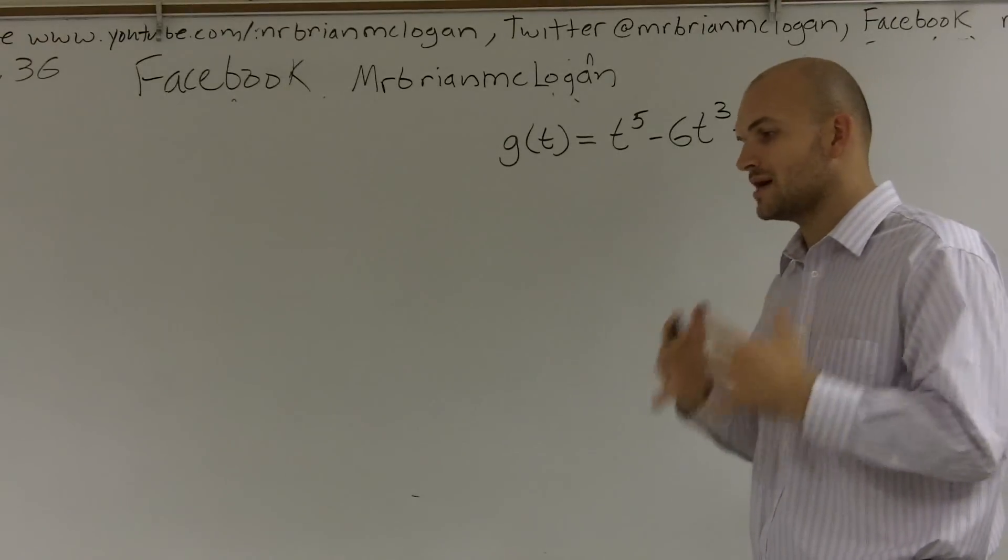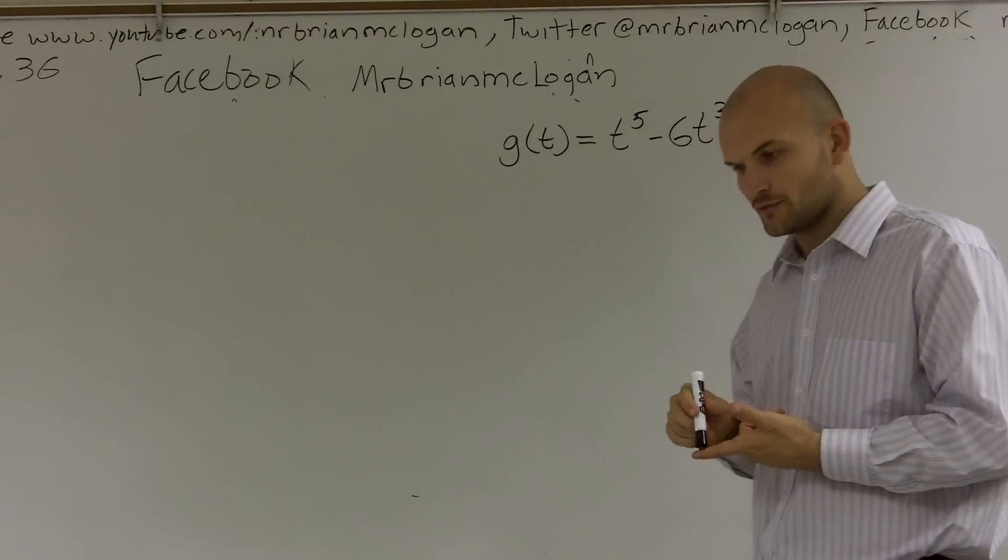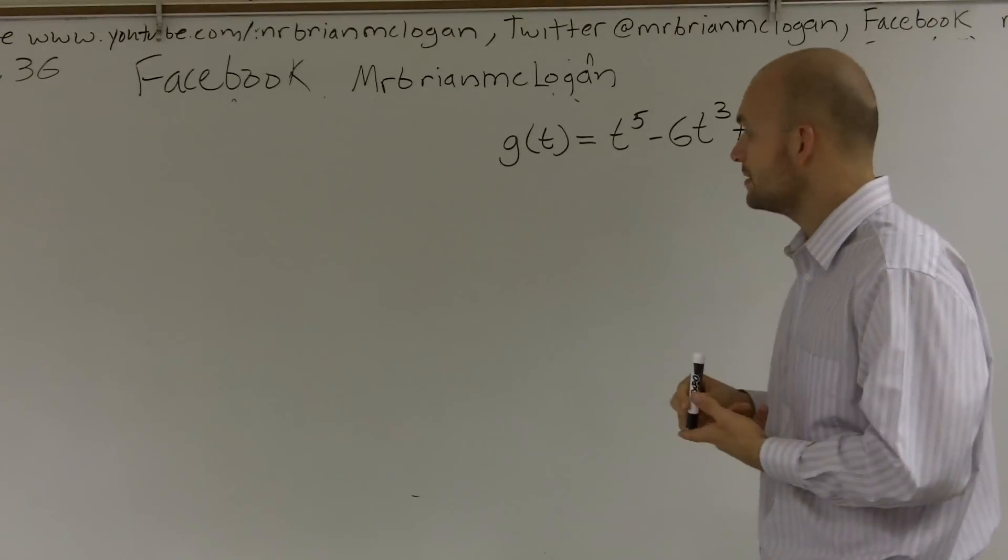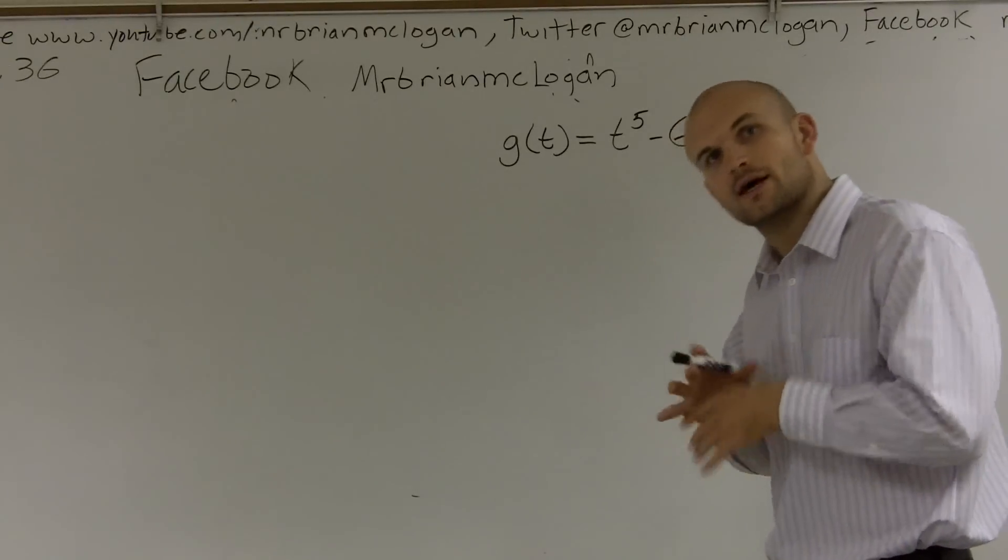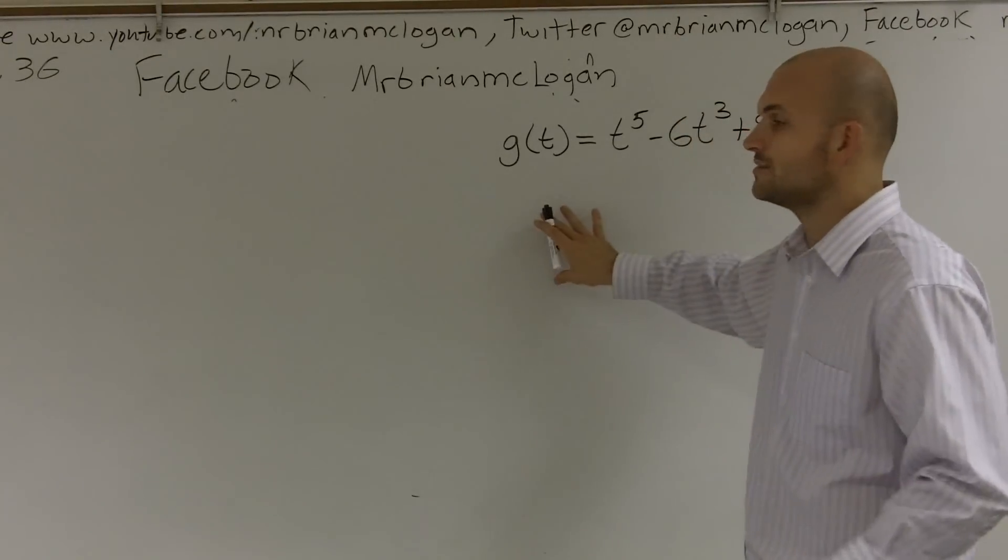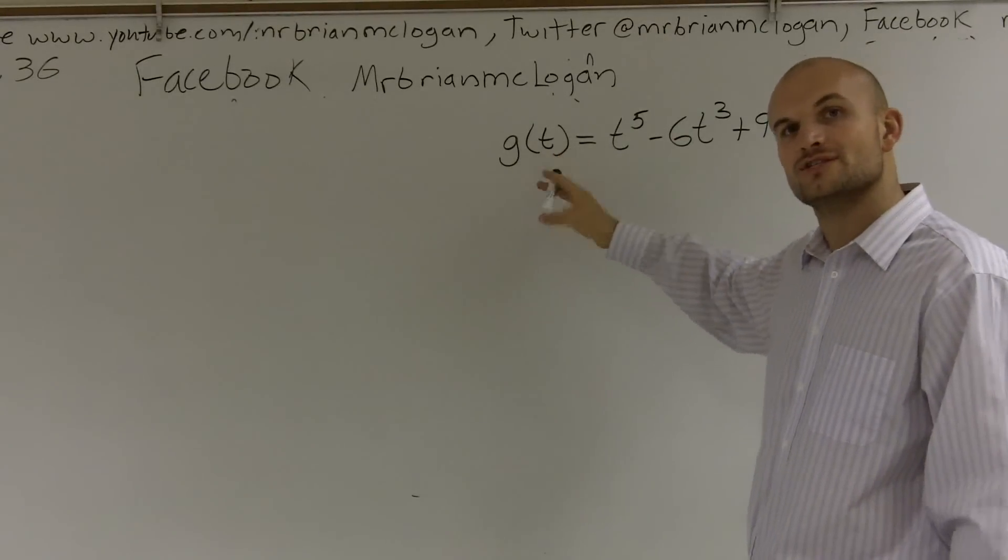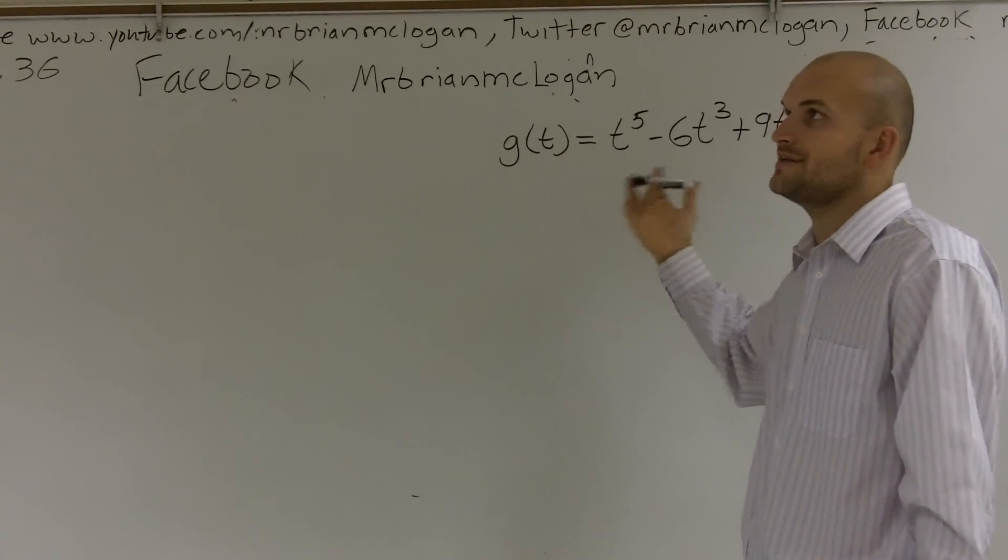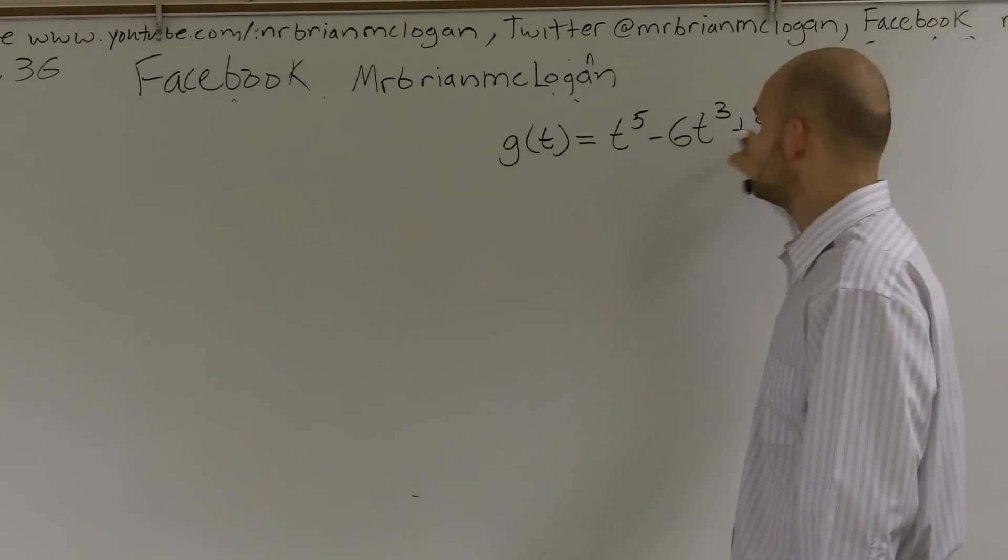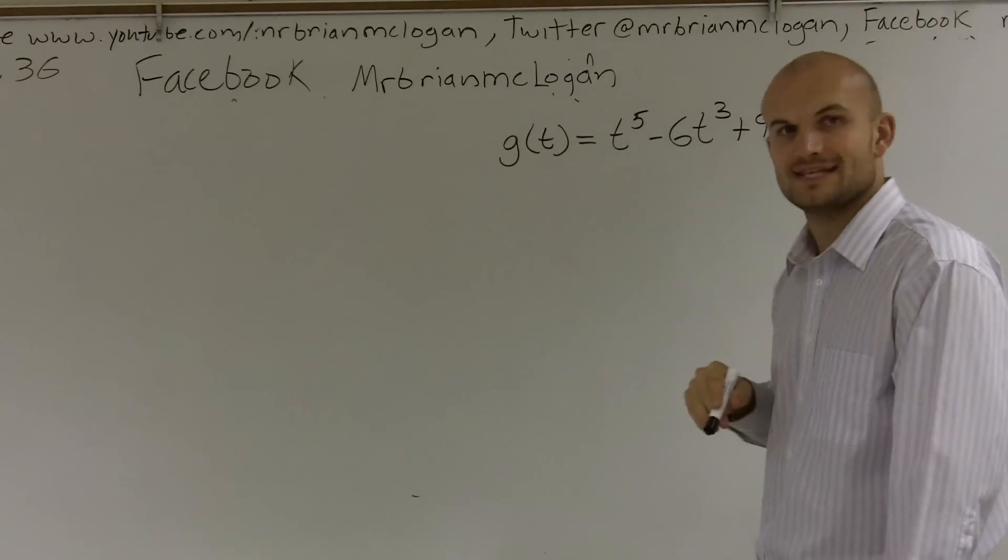And remember, guys, when we're talking about the zeros, the zeros are the same thing as the roots, same thing as the x-intercepts. They all mean the exact same thing, and what we're trying to do is we're trying to find out when is our output value of our function zero. So we say, finding the zeros, we want to find the values of t that make g of t zero.